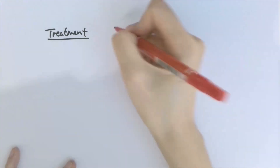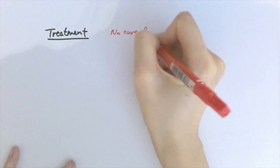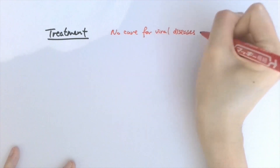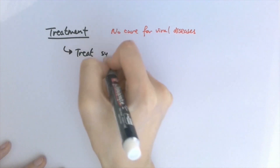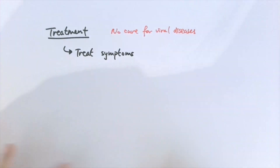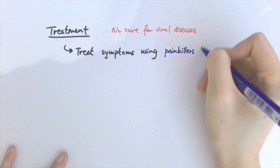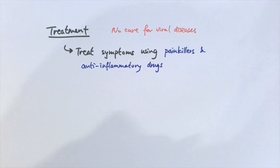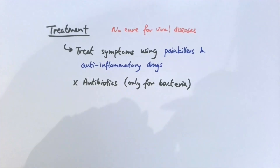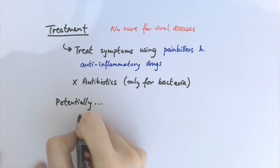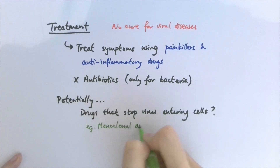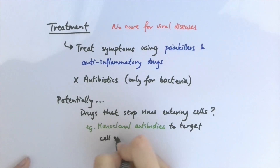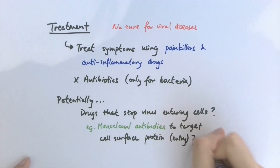Let's talk about treatment. As the virus takes over cells to reproduce, it's always been hard to develop effective medicine to cure viral diseases without damaging our own body cells in the process. This means there is no cure for viral diseases most of the time. What we can do is treat the symptoms as best as we can using painkillers and anti-inflammatory drugs. Keep in mind, antibiotics won't work on the virus as they only kill bacteria. There has been some research on producing drugs targeting the proteins on our cell membranes that let the virus into the cell, but no medicine has been developed yet.